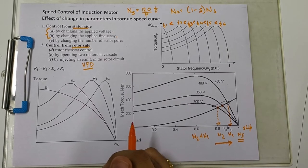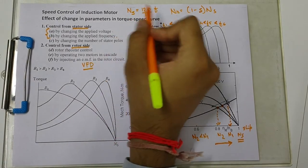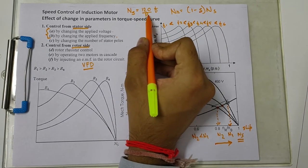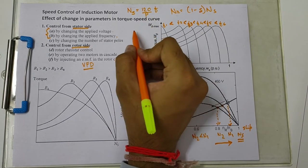Now, another method to change the synchronous speed, as is evident from this equation, is if we change the number of stator poles.